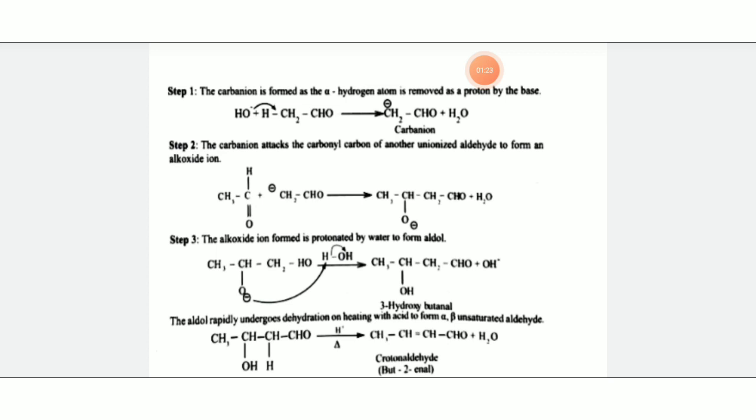Mechanism of the aldol condensation reaction. First step: formation of enolate. When the base abstracts the acidic hydrogen to form the enolate, the enolate undergoes formation of enolate ion.